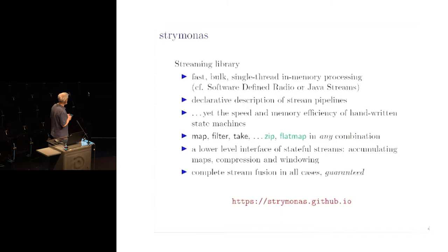You write pipelines in a declarative way, but still get memory and efficiency of handwritten state machines. It has the standard primitives: map, filter, take, et cetera. It's also zip and flat map in any combination. I emphasize this because usually a lot of libraries either provide flat map or provide zip, or restrict in which combination zip and flat map can be used. It's a very rare occasion that StreamOnus library provides both.